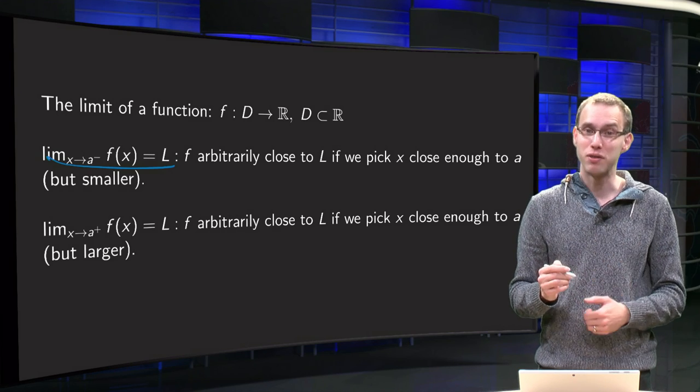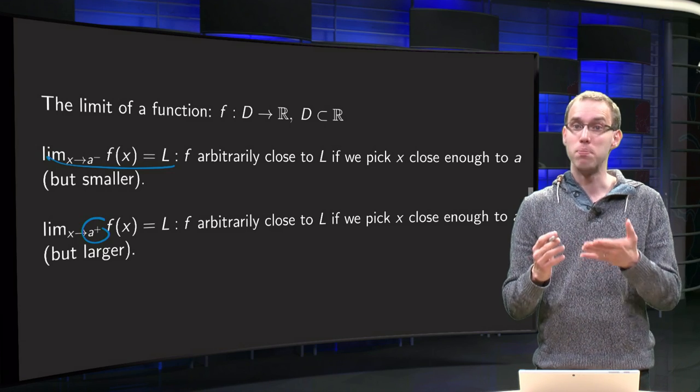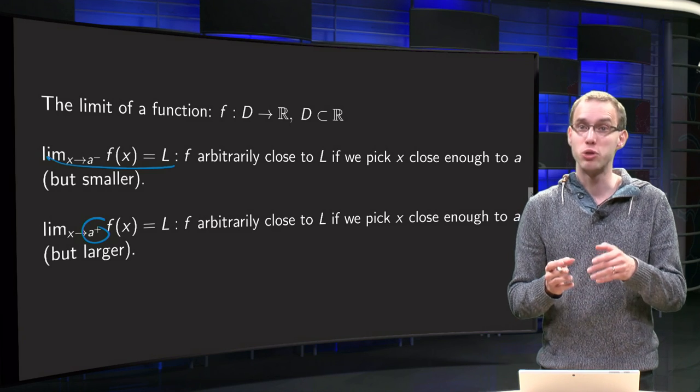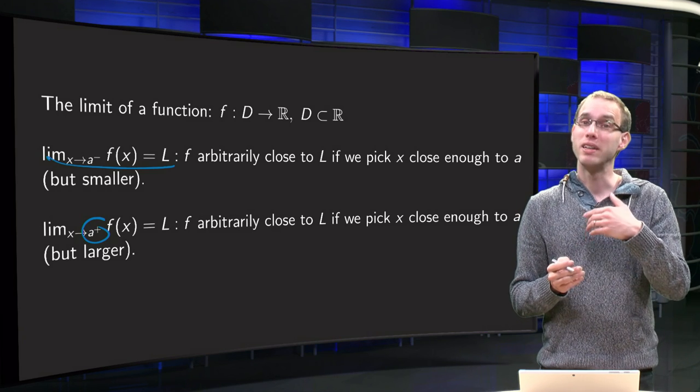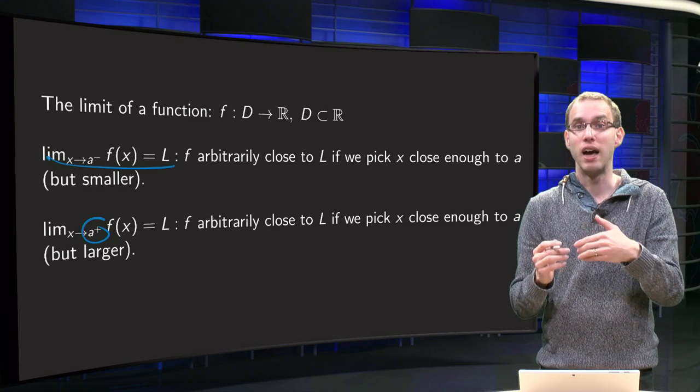If we take instead of the minus a plus sign over here, limit x to a plus f(x) equals L, that means that we can get f arbitrarily close to L, but now by taking values of x above a, so coming from above, hence the plus.